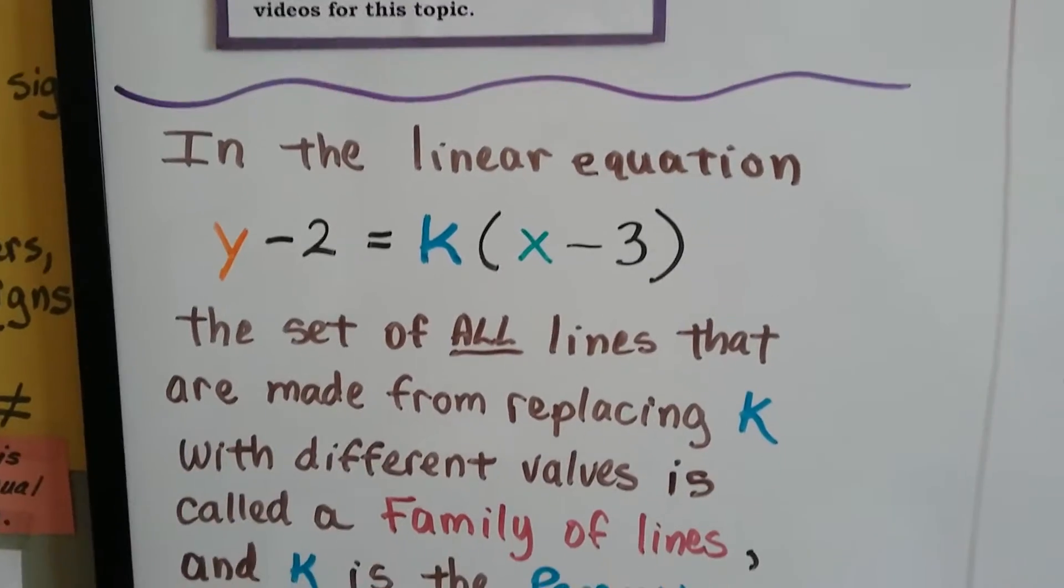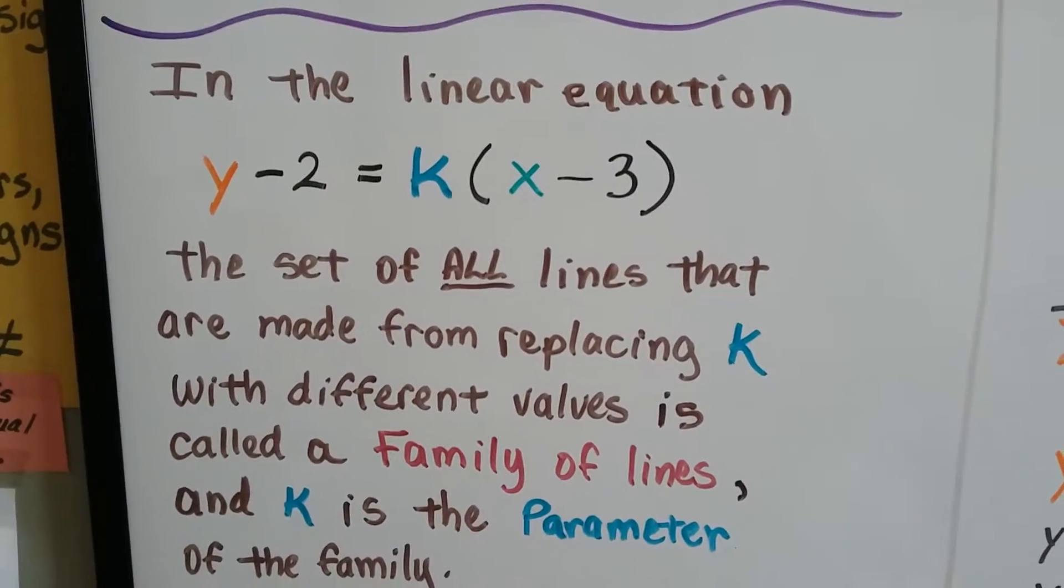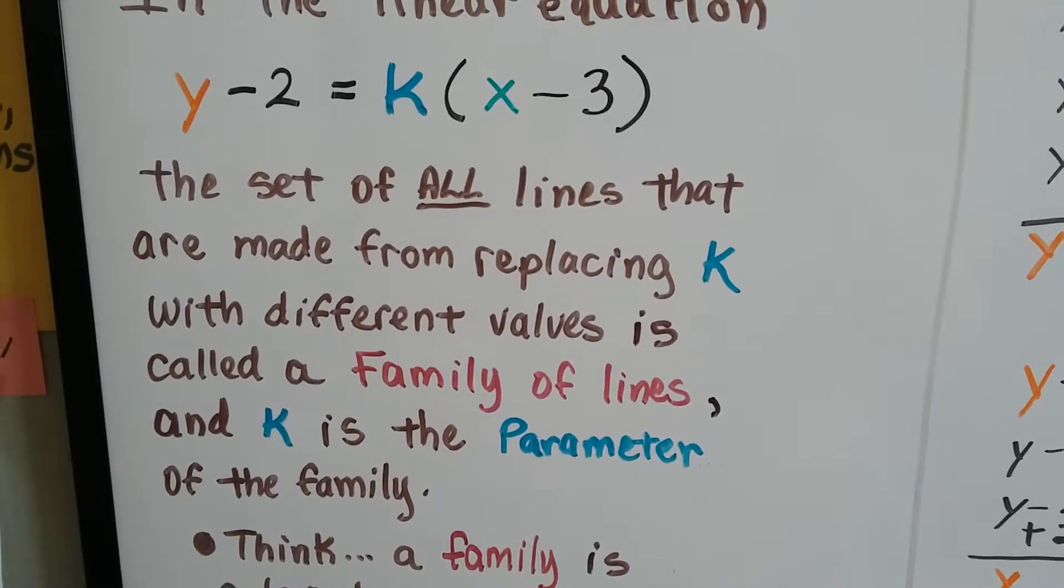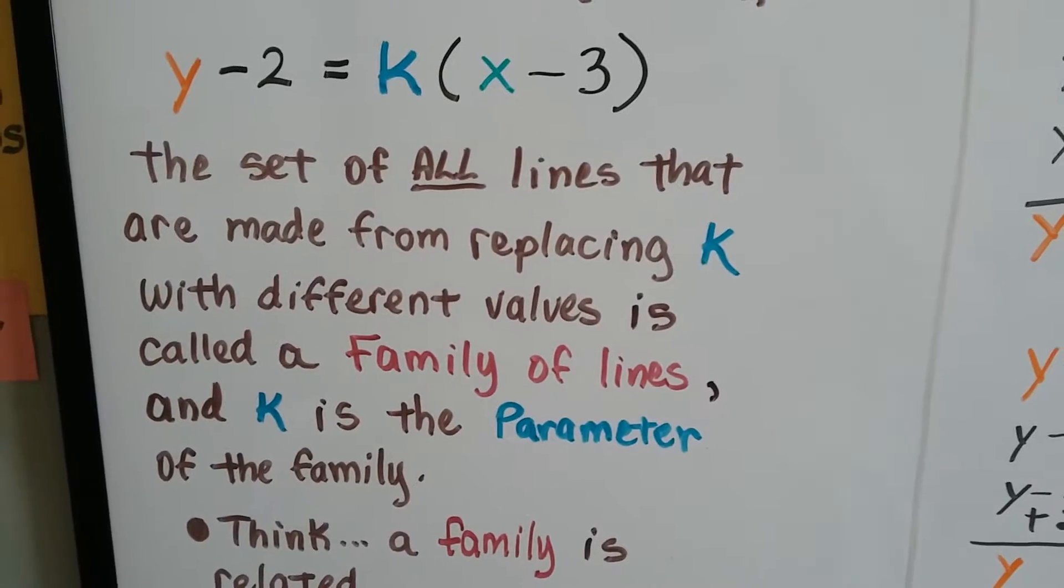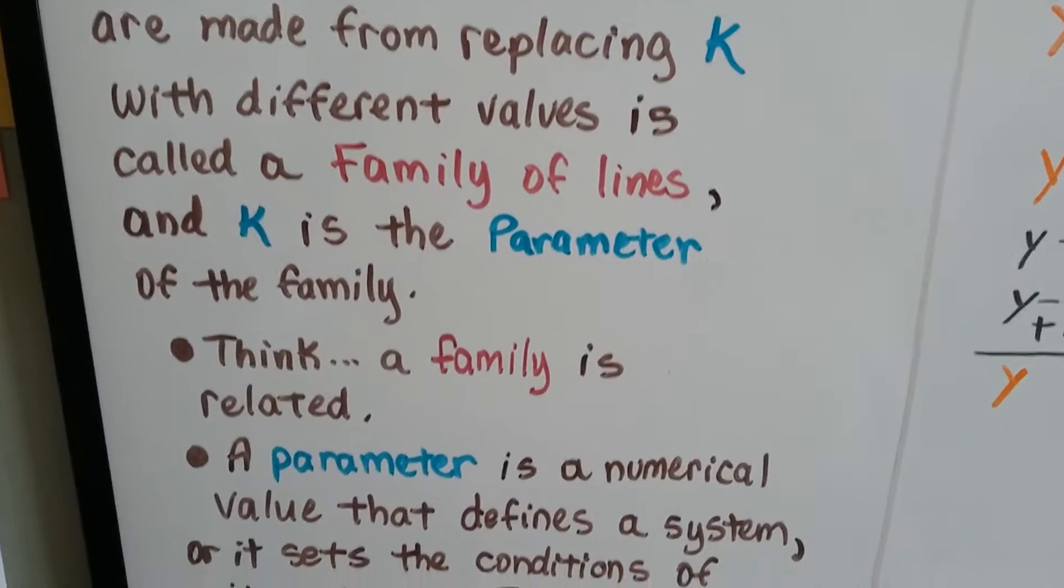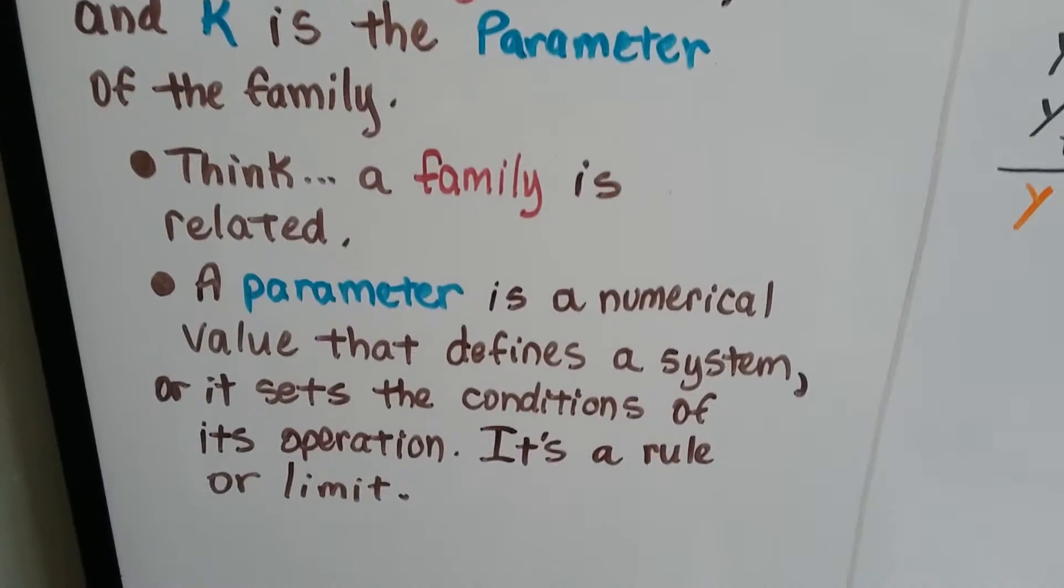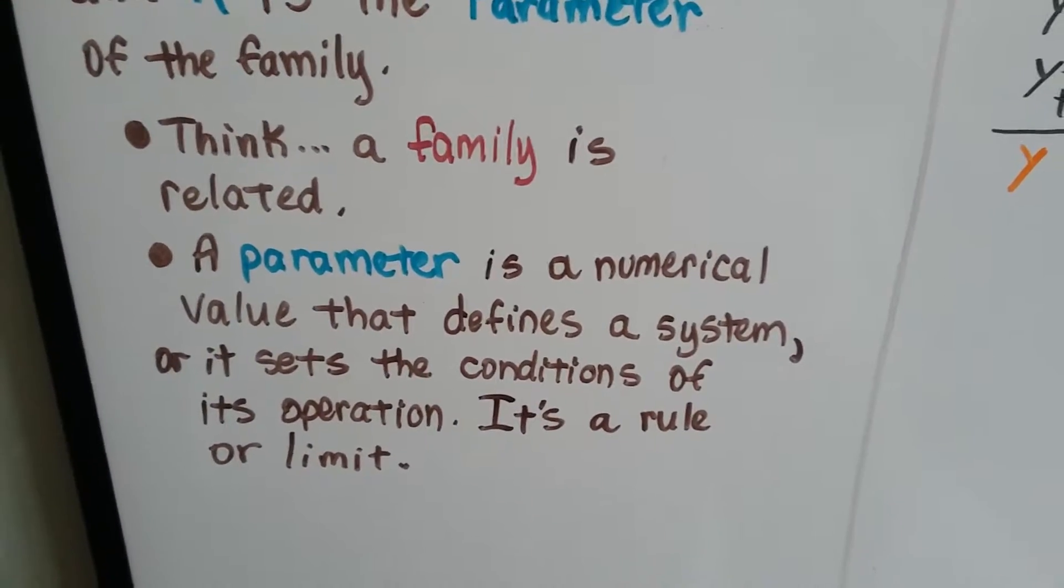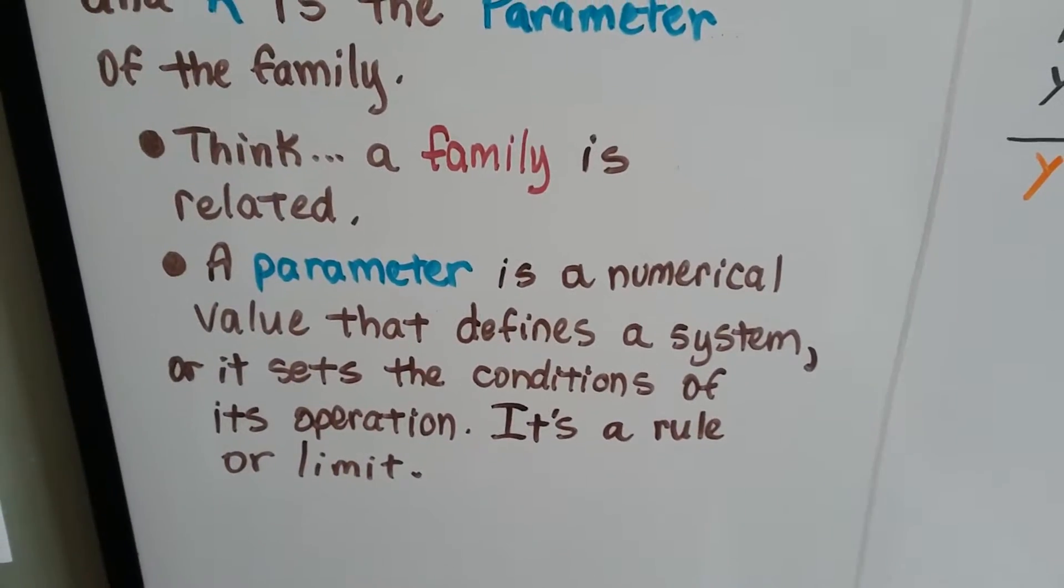In the linear equation y minus 2 equals k times x minus 3, a set of all the lines that are made from replacing k with different values is called a family of lines, and k is the parameter of the family. Think - a family is related. And a parameter is a numerical value that defines a system or sets the conditions of its operation. It's like a rule or a limit.